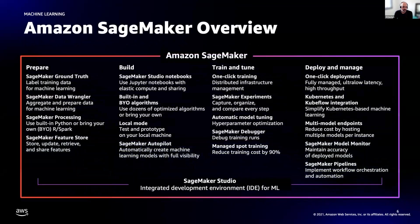Amazon SageMaker is an end-to-end machine learning platform that helps both developers and data scientists to prepare, build, train, tune, deploy, and monitor machine learning models. SageMaker is modular, so you can pick and choose the parts you like — for example, just use it for training or just for deployment — and you can mix and match with any third-party tools.